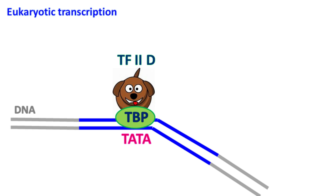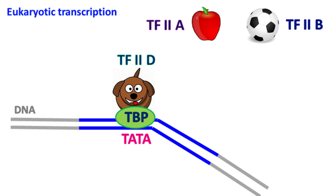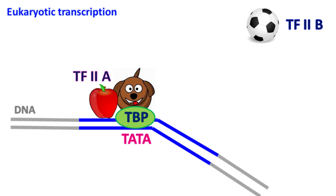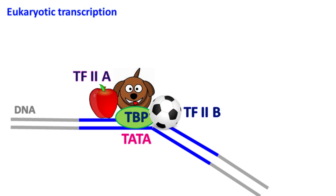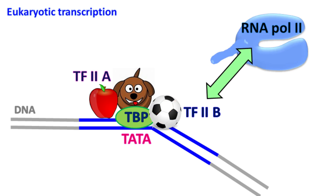Once TBP binds the TATA sequence, it bends the DNA by 80 degrees. This bending of DNA further helps in the binding of other transcription factors, including TF2A and TF2B. TF2A helps in stabilizing the binding of TF2D with the promoter. TF2B interacts with TBP and the promoter region downstream to the TATA sequence, and helps in the recruitment of RNA polymerase II on the promoter.